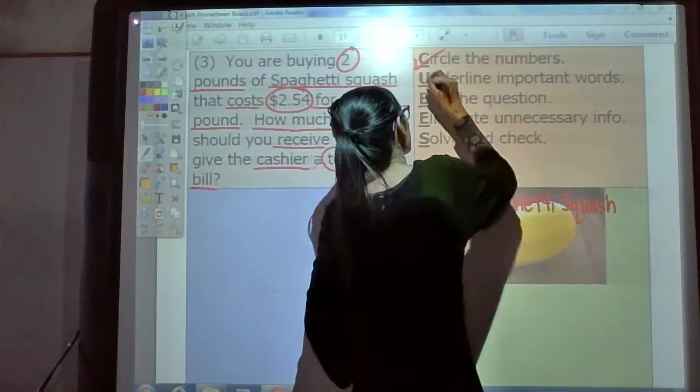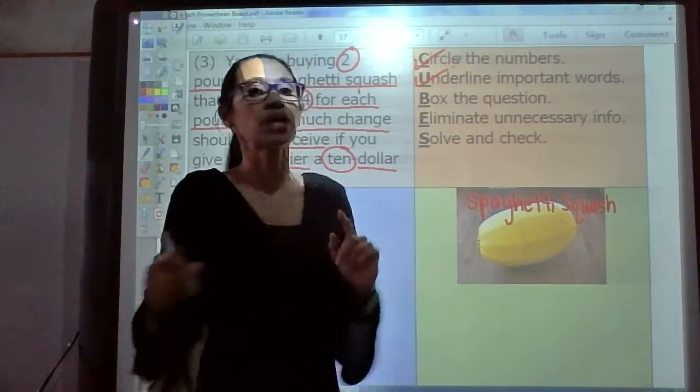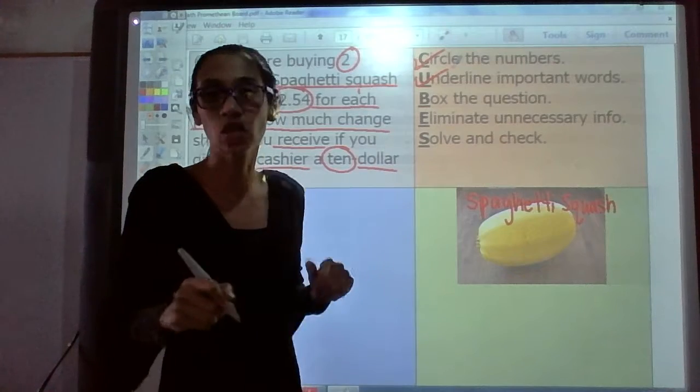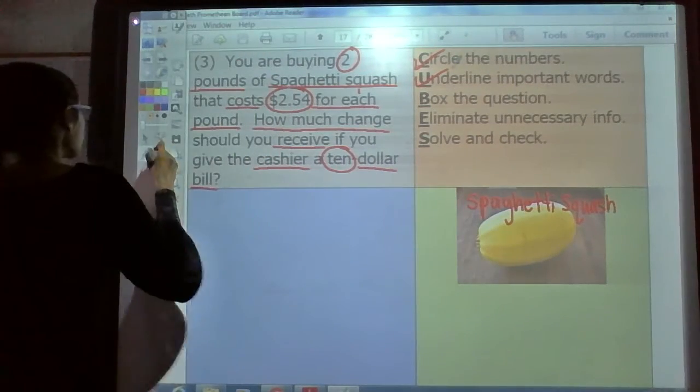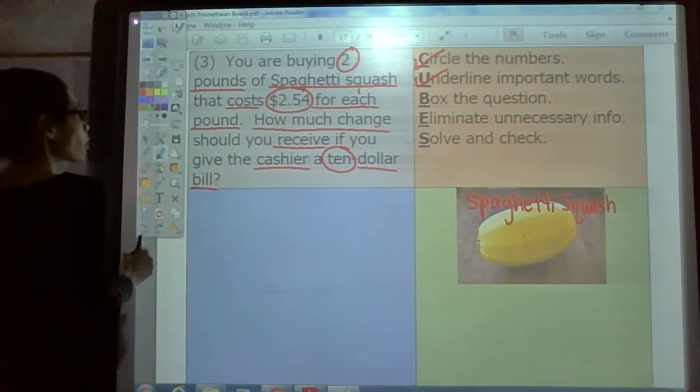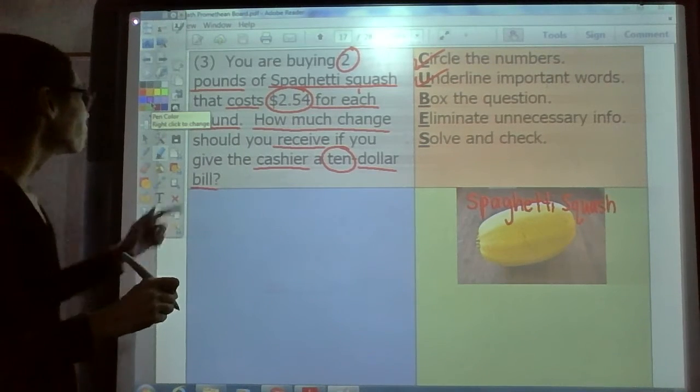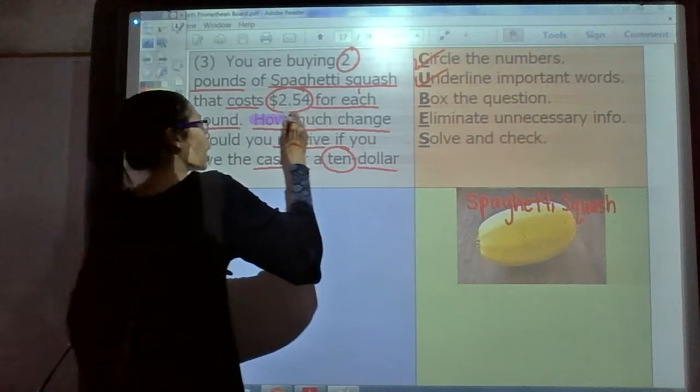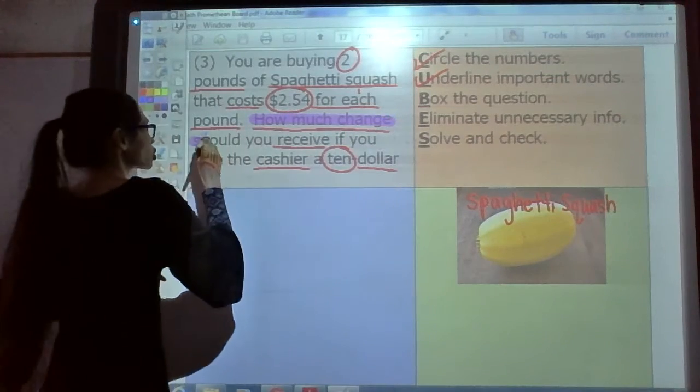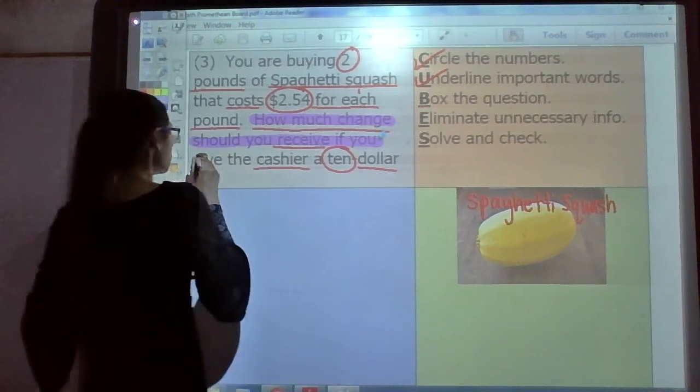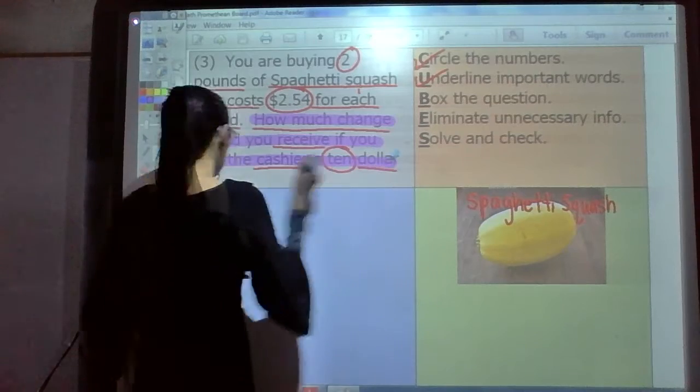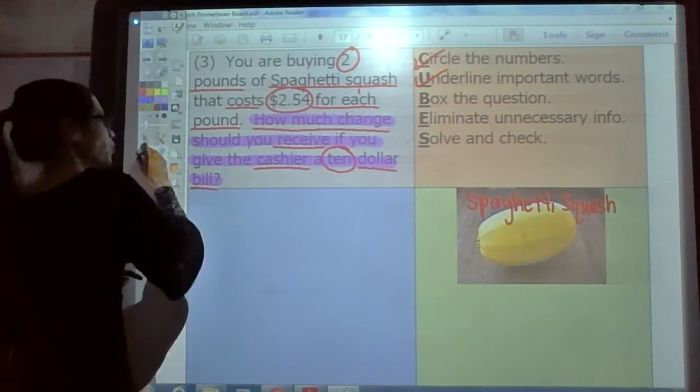The next step is to B, box the question. Box the question, highlight the question, do something with that question. Circle it, square it, whatever. Where's the question? Bam, right there. How much change should you receive if you give the cashier a $10 bill? Done with that step.